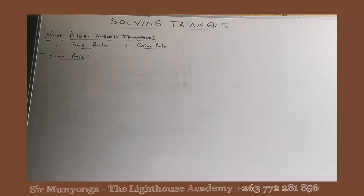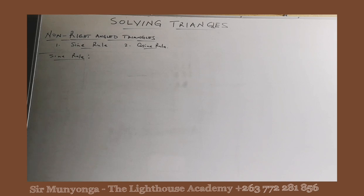Now we are looking at non-right-angled triangles. Non-right-angled triangles are solved using either the sine rule or the cosine rule. So first in this episode we'll be looking at the sine rule.